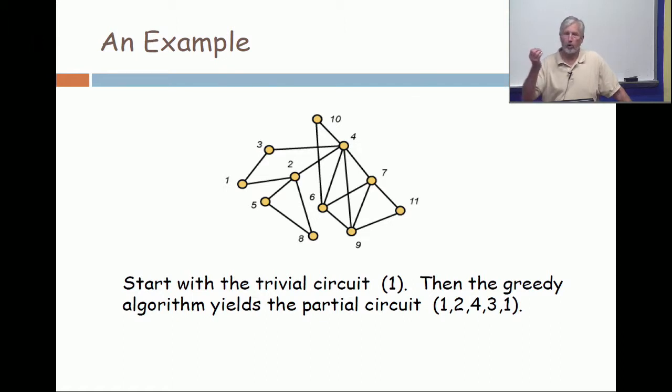So, the first loop halts with the circuit one, two, four, three, one. Is that clear? All right. So, now, expand by opening up one to one, two, four, three, one. All right. Now, continue.